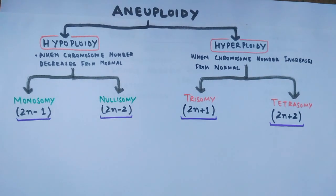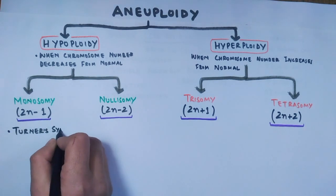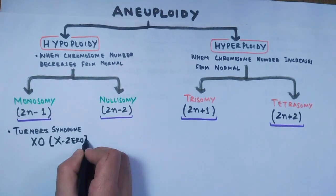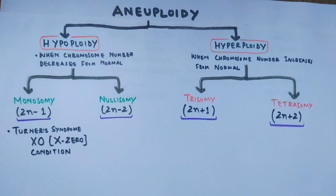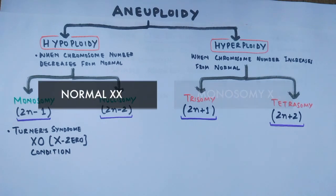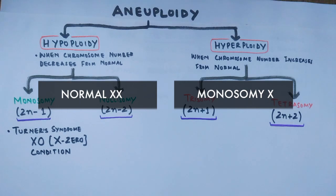In monosomy aneuploidy, the cell has one chromosome fewer than normal. An example is Turner syndrome, having the X0 condition, also known as the 45,X0 condition. This monosomy condition is seen in females, in which the female is missing one X chromosome, having only one X chromosome instead of two.